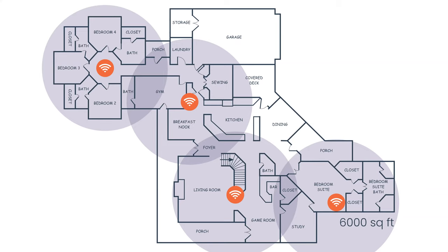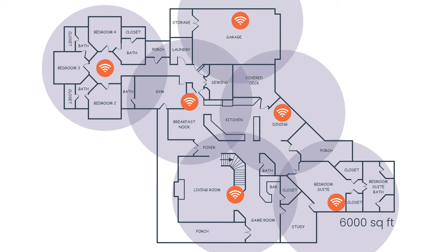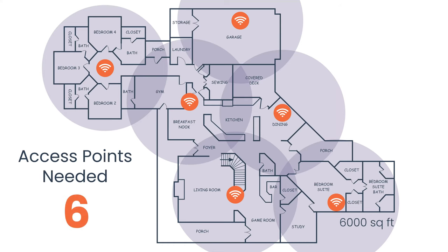Shifting the second and fourth APs resolves the roaming gaps across the breakfast nook, gives the study good coverage, and covers the master suite. Adding a fifth AP in the dining room and a sixth for the garage brings the total to six — our estimate was five, but the unique long layout with multiple wings requires six to cover the entire home with the fewest access points possible.